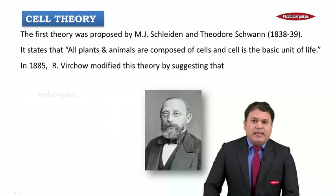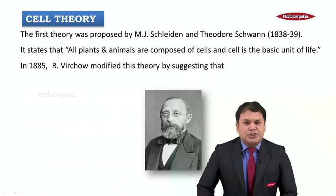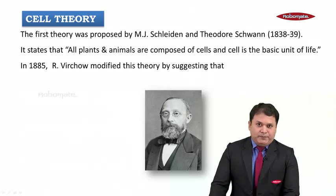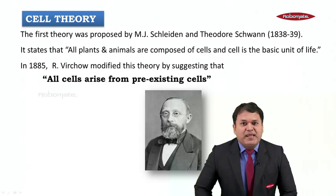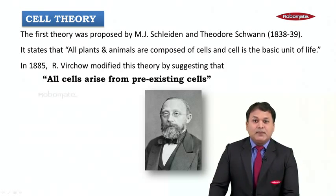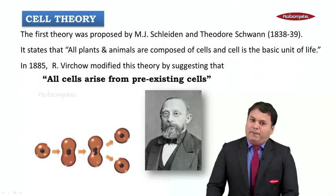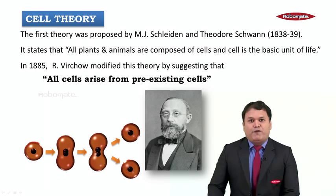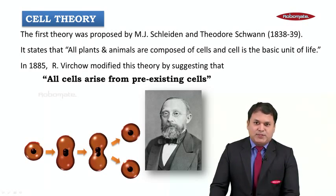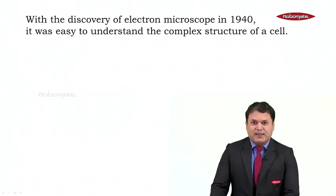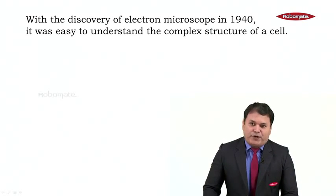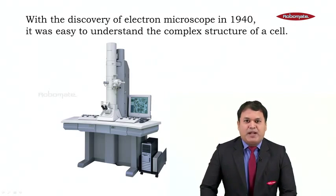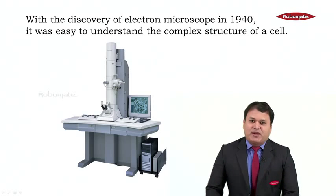Later, in the year 1855, R. Virchow modified this theory by suggesting that all cells arise from pre-existing cells. Only when a pre-existing cell is present can a new cell arise. Then with the discovery of the electron microscope in the year 1940, it became easier to understand the complex structure of a cell.